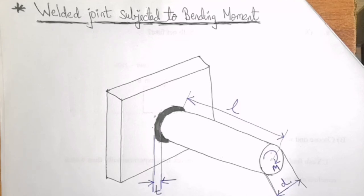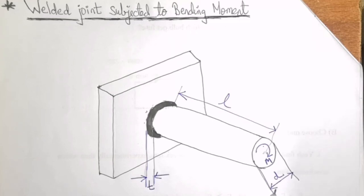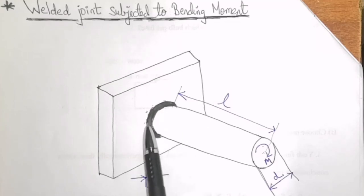Welcome students. In the previous class we have seen welded joints subjected to torsion or twisting moment. Today we will be going through welded joints when subjected to bending moments. Consider a circular shaft of diameter D welded to a support by means of a circumferential weld.